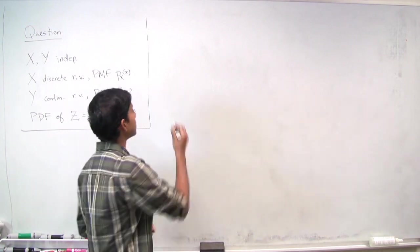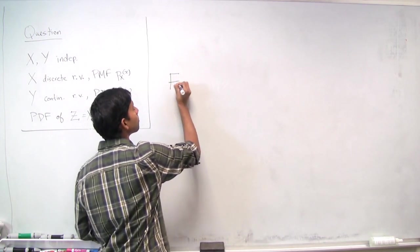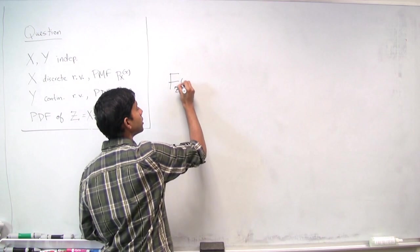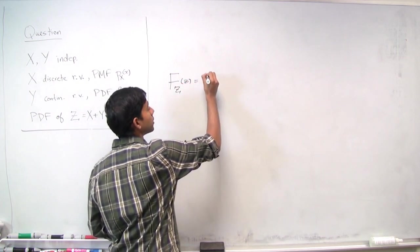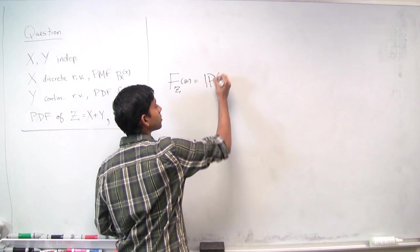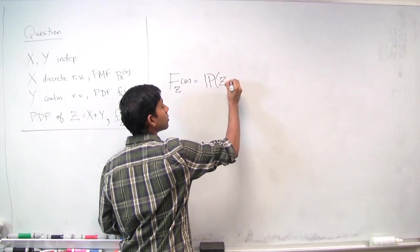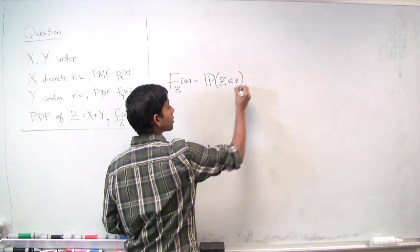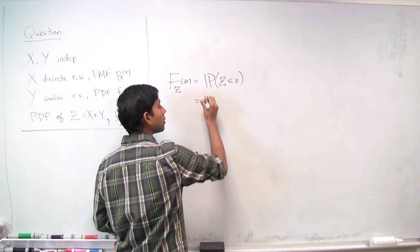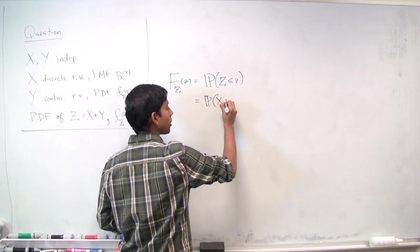So in this case, the CDF, which is F_z, by definition is the probability that the random variable z is less than little z, but z is just x plus y.